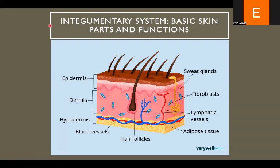We are looking at the basic skin parts and functions. If you look at this very beautiful picture, you have the epidermis, the dermis, and hypodermis. Epi means above or on top, so it is on top of the dermis. Hypo means below. You can see coming out of the skin these projections which are actually hair follicles — the roots of the hair within the dermis. We also have several layers of cells in the epidermis, and there are cells within the dermis and blood vessels as well.